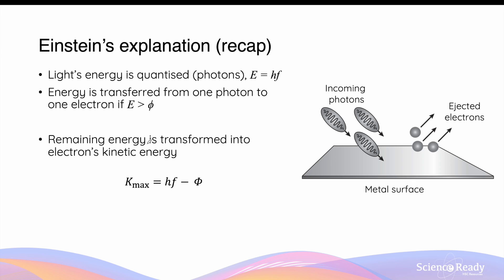If the energy transfer occurs, the remaining amount of energy of the photon after overcoming the work function is always transformed into the electron's kinetic energy. Einstein said the photon will transfer all of its energy and keep none for itself, so that remaining amount of energy after the work function is overcome is always transformed into kinetic energy. This leads to the important equation: the maximum kinetic energy of a photoelectron equals hf minus the work function of the metal.